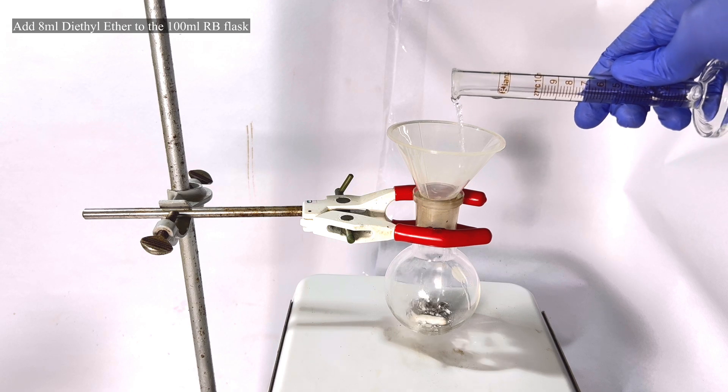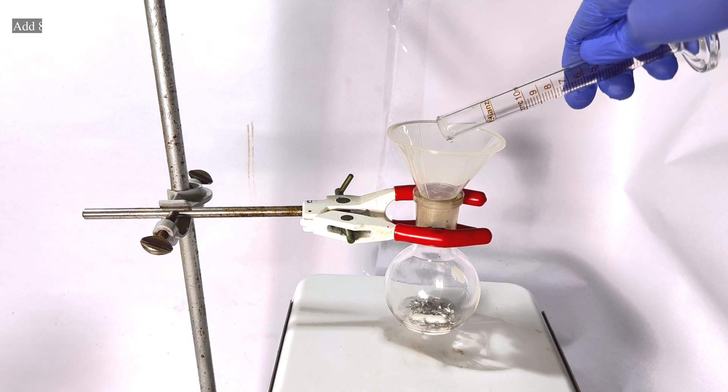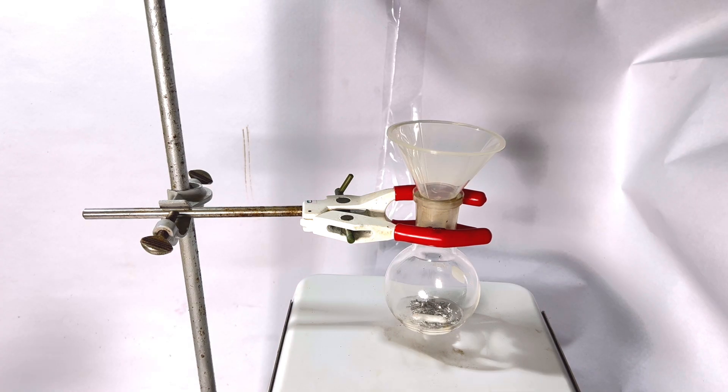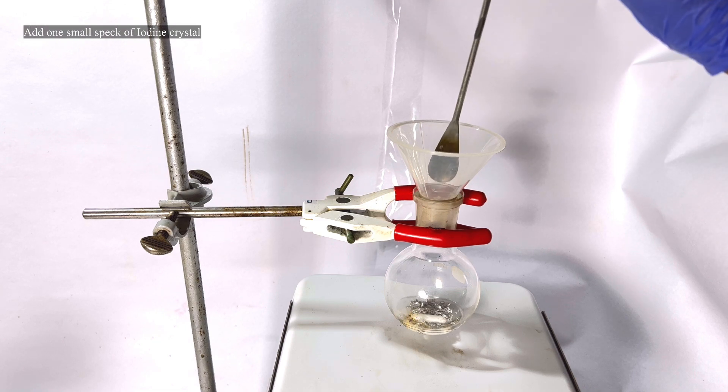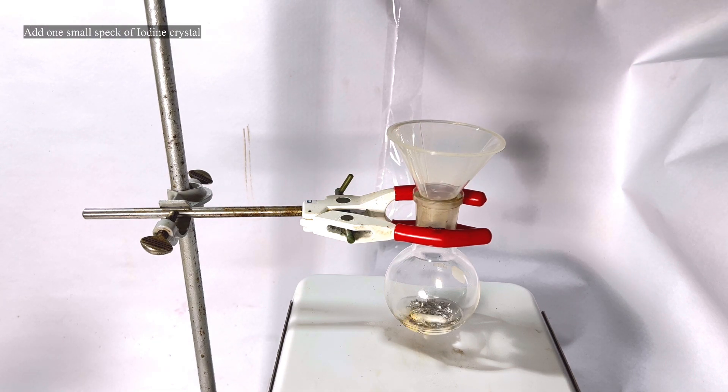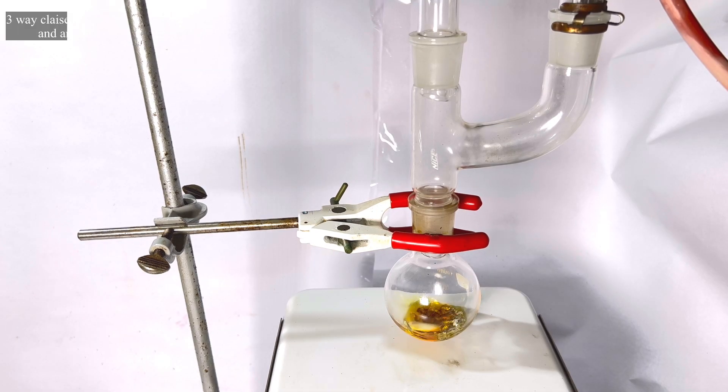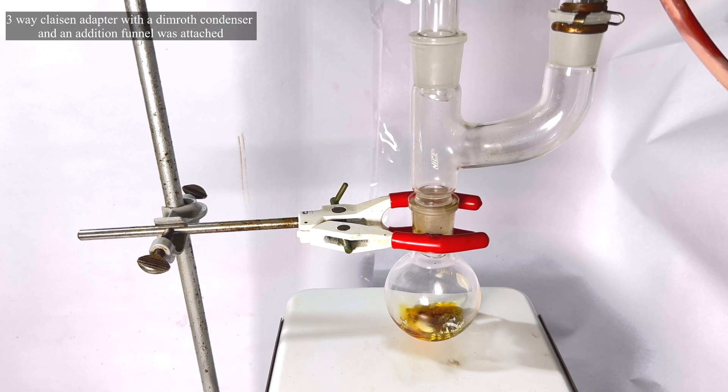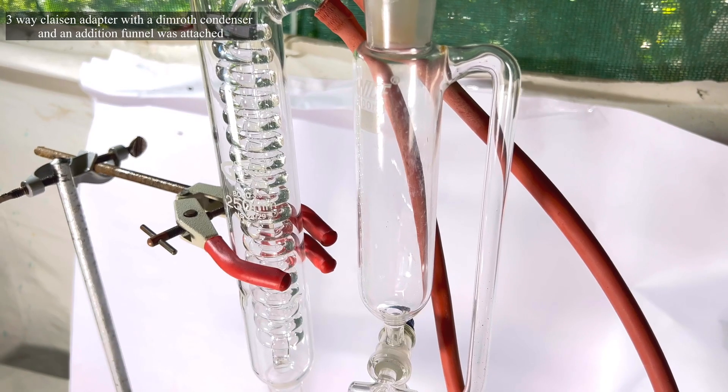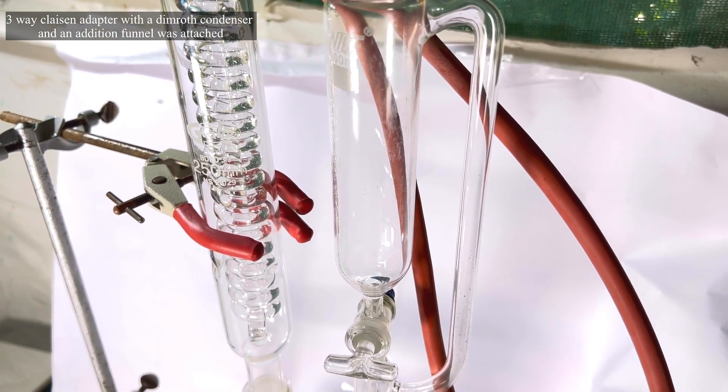Next, 8 ml of sodium-dried anhydrous diethyl ether was added to the flask. A tiny speck of iodine crystal was added to the flask. The iodine will help remove the passivating oxide layer over the magnesium turnings. Now a 3-way Claisen adapter is connected on the round bottom flask.